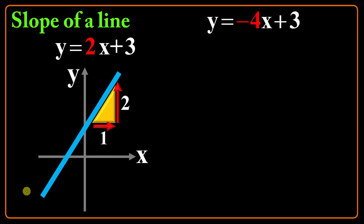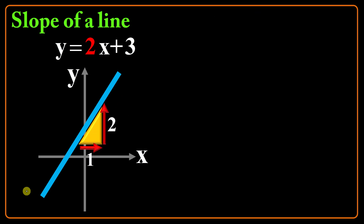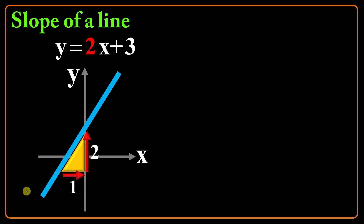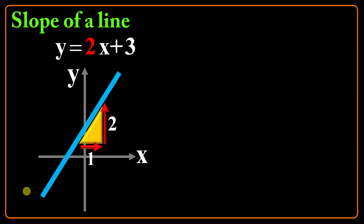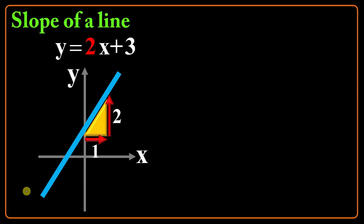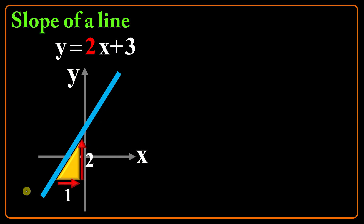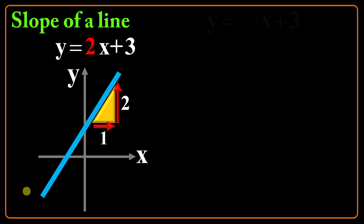The ratio of 2 over 1, which is the slope of this line, keeps the same value everywhere. So the slope of a line is not something that changes at any other point.